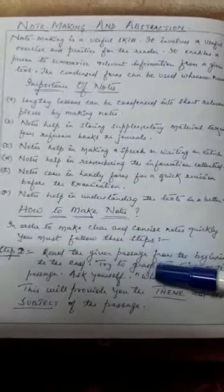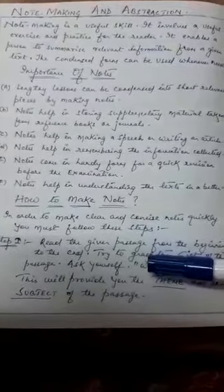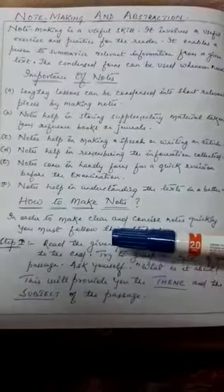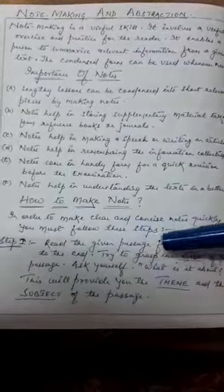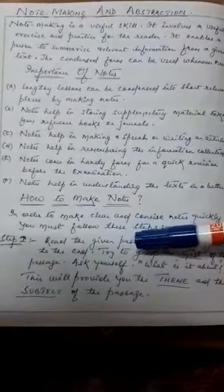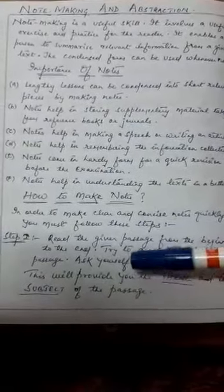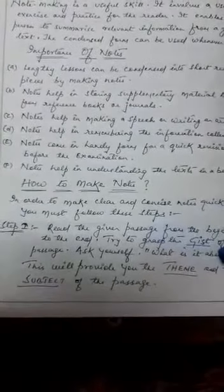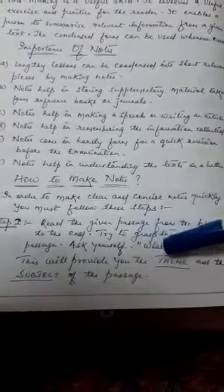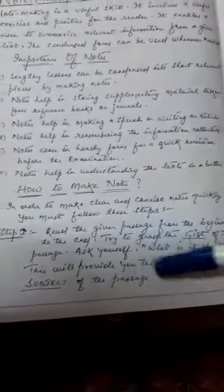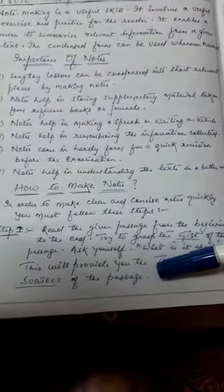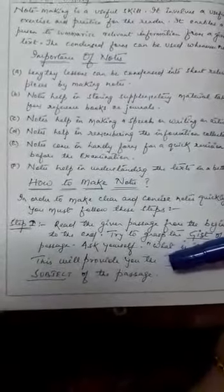Let us revise our steps then move forward. Step one was read the given passage from the beginning to the end, try to grasp the gist means the summary of the passage, and then ask yourself what is it about. This will provide you the theme and the subject of the passage.